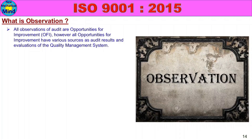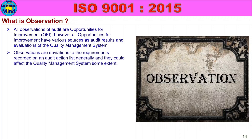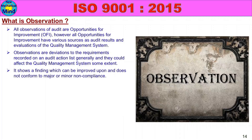Conformance can be confirmed from various sources such as audit results and evaluations of the quality management system. Observations are opportunities for improvement in the future. They are minor deviations where results are slightly deviant from requirements. Observations show a finding which can be improved upon and does not confirm major or minor non-compliance.